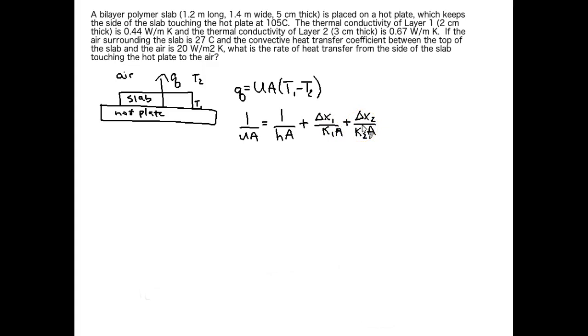When you're writing your equation for 1 over UA, it isn't a set equation like Q equals UA delta T. 1 over UA depends on what your system is and where you're transferring heat to. So remember that. Take a careful look at your diagram and make sure you're accounting for all the different modes of heat transfer that happen.